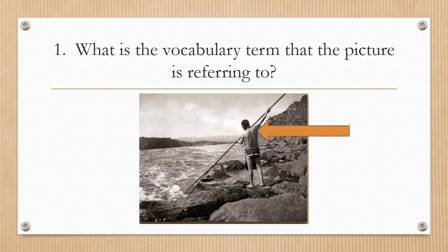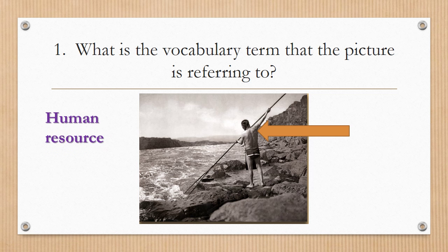Number one: what is the vocabulary term that the picture is referring to? Notice the arrow is pointing to the man who is spearfishing — this would be a Kwakiutl man catching his dinner. This would be a human resource because the human is doing the needed or necessary job. People are human resources.